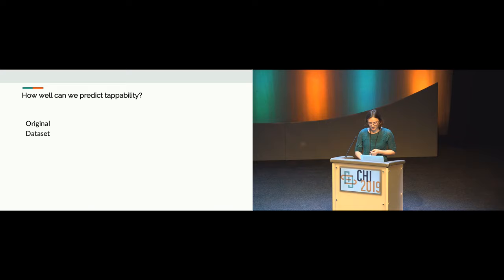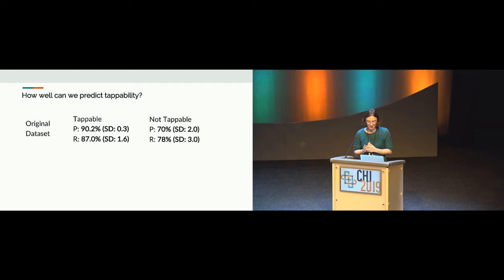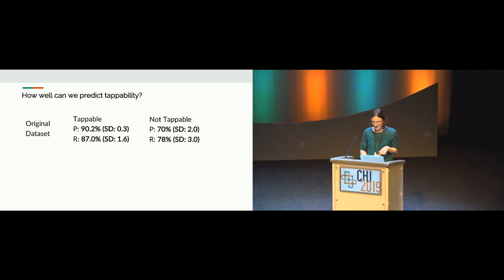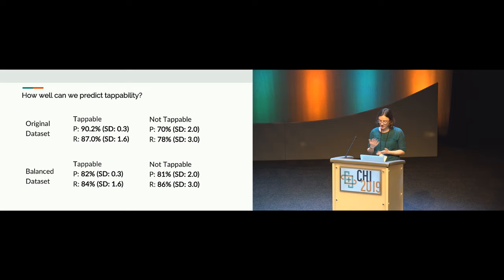How well can we predict tappability? We predicted tappability with a precision of 90.2 and recall of 87 for tappable elements, and around 70 and 78 for not tappable elements. The original dataset was unbalanced — around 14,000 tappable and 6,000 not tappable elements — so we created a balanced dataset by up-sampling the not tappable elements. This led to a drop in precision and recall for tappable elements but greatly improved accuracy for not tappable elements.